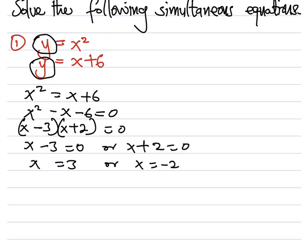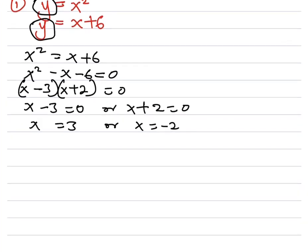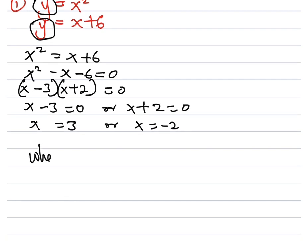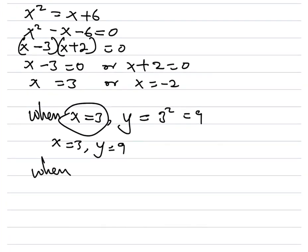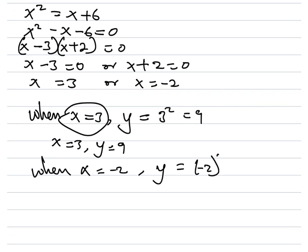Now we need to look for the y values. When x = 3, we substitute into y = x², giving y = 3² = 9. So we have the pair x = 3, y = 9. When x = −2, y = (−2)² = 4. So the second pair is x = −2, y = 4.